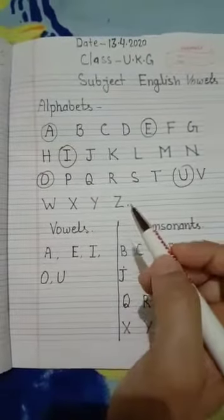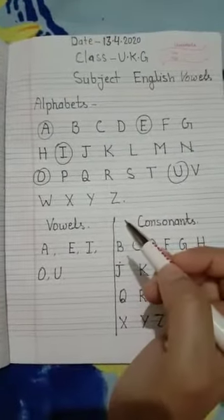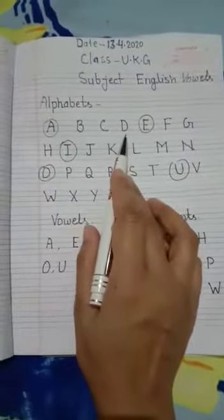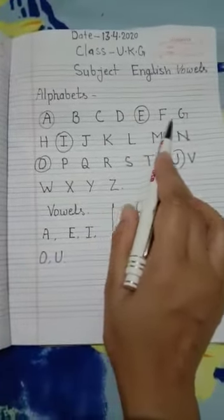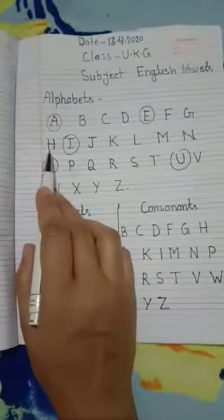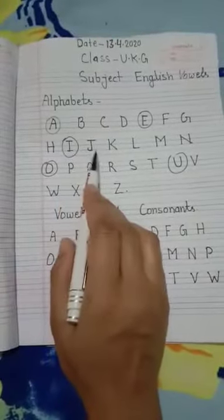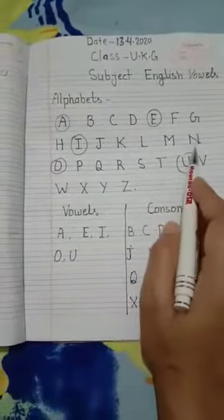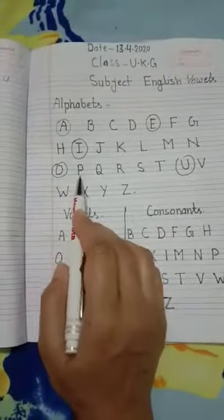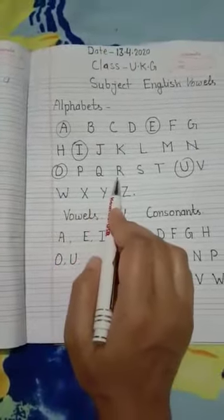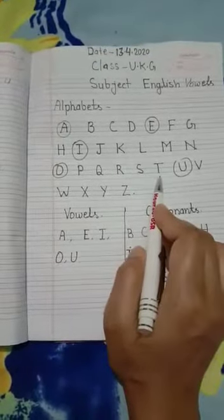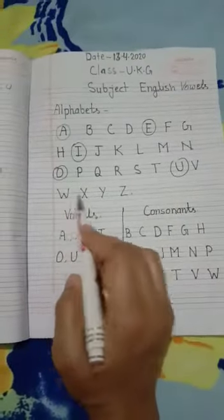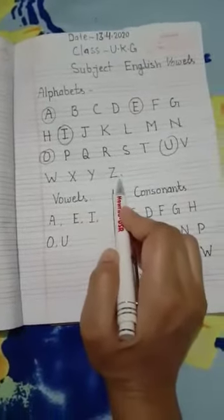In English alphabets there are 26 letters. A, B, C, D, E, F, G, H, I, J, K, L, M, N, O, P, Q, R, S, T, U, V, W, X, Y, Z.